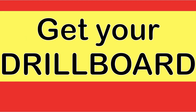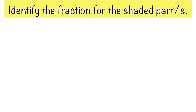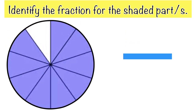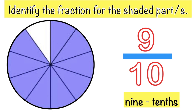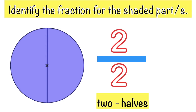So now, children, get your drill board! I want you to identify the fraction for the shaded part. Let's have the first number — what is the fraction of the shaded part? The answer is nine-tenths. How about this one? The fraction for the shaded part is two halves. Since we have two shaded parts and two equal parts, always remember: if both numerator and denominator are the same, that means the fraction is equal to one, because it is equal to one whole.